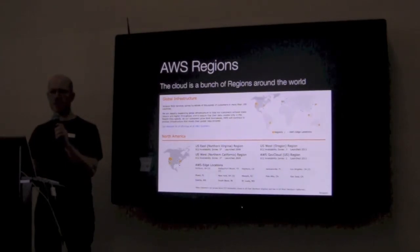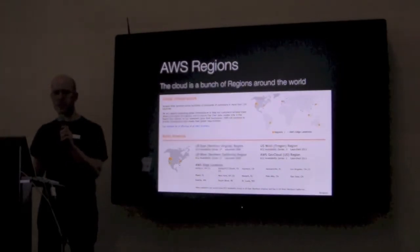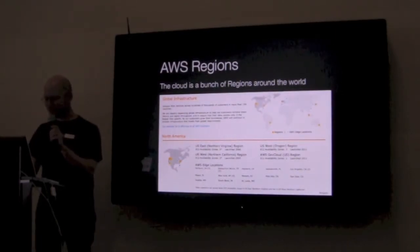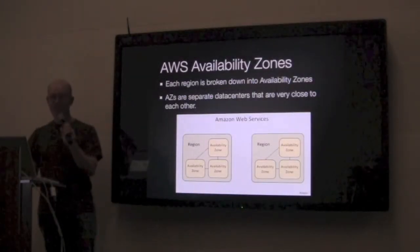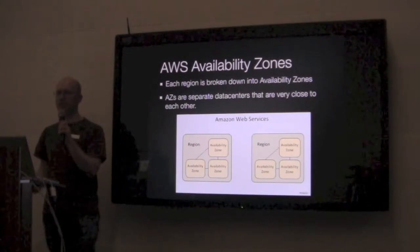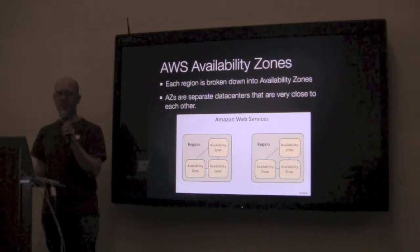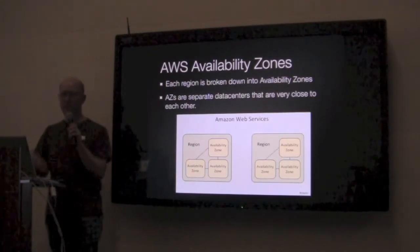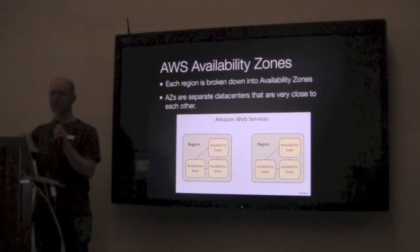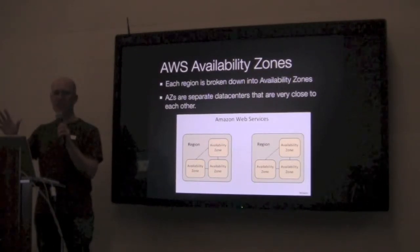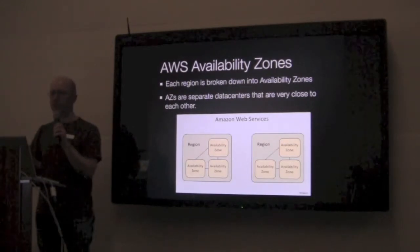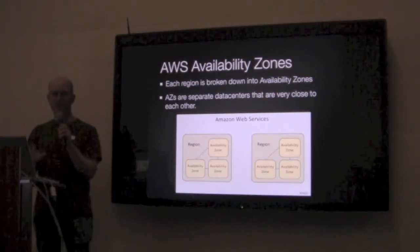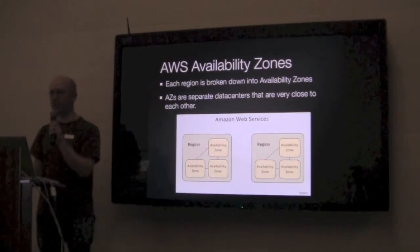The main ones that people in the United States tend to use: there's one in Virginia, one in Portland, one in Northern California, and a special government one I know nothing about. Within each region we have what are called availability zones — basically just data centers. There tend to be about three per region, and they're separate data centers. The idea is that if one blows up, the other two should still be working. But in practice it's not always that nice — sometimes entire regions go down.